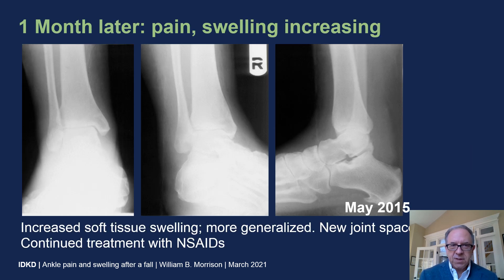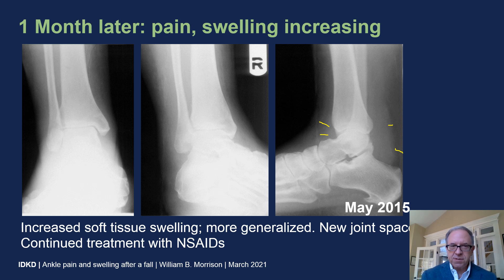She was treated with non-steroidal anti-inflammatory drugs, provided with a brace, and sent home. One month later, she continues to have pain with increasing swelling, now more generalized. Radiographs show diffuse soft tissue edema around the ankle which has increased compared to the prior exam, and it looks like the soft tissue around the ankle joint has increased suggesting an increased joint effusion. She was continued on NSAIDs and sent home again.